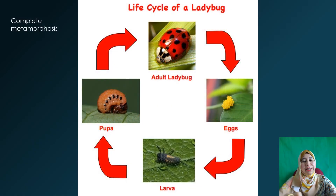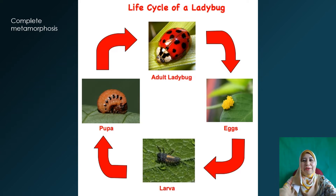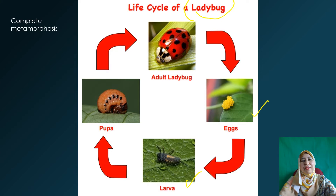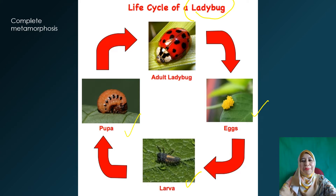This is an example of an insect undergoing complete metamorphosis — the ladybug. It starts with egg, which becomes larvae; larvae become pupa; pupa later becomes adult; and the cycle continues.